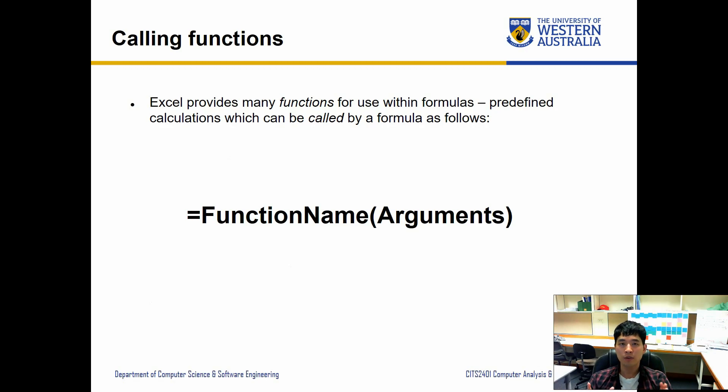Excel provides many functions for use within formulas—predefined calculations which can be called by a formula as follows: equal, function name, and an argument. We have already seen this using some of the functions already such as AVERAGE. And AVERAGE expects a bunch of inputs separated or a range, then it's going to use all those numbers and calculate the average. And there are a few other functions that do the same, but when you start writing the function name and then input the open bracket, then Excel automatically shows you how many arguments are needed and what kind of arguments are expected in each slot.